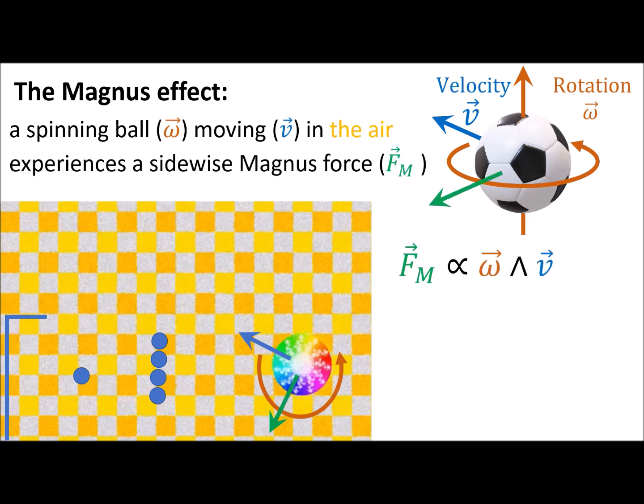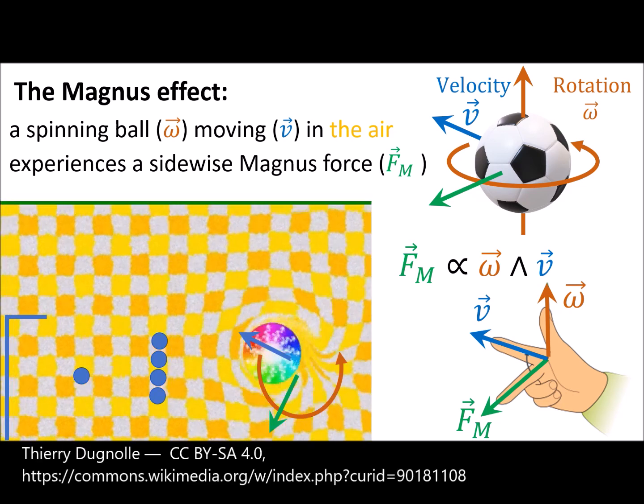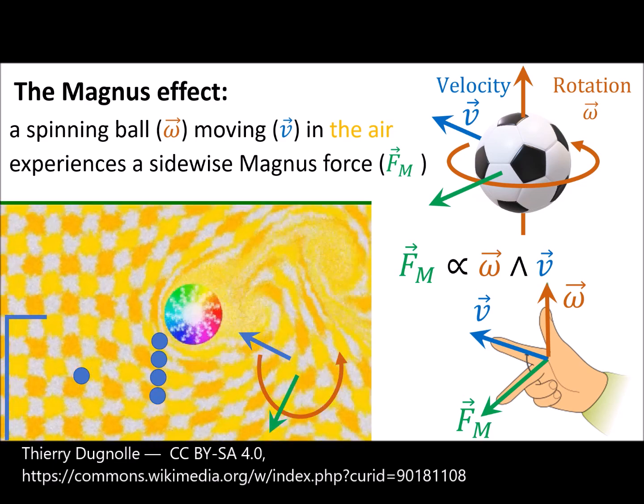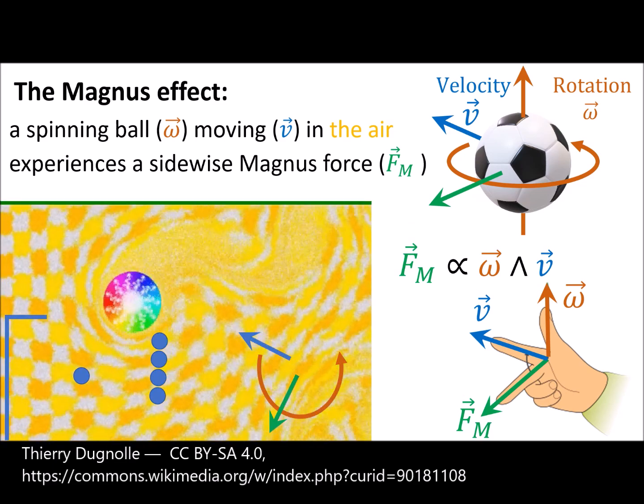Then the ball experiences a Magnus force perpendicular to its velocity and spinning axis. The different air pressure on each side of the ball gives rise to a curved trajectory.